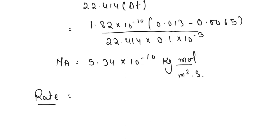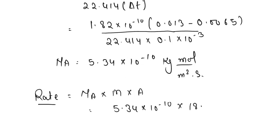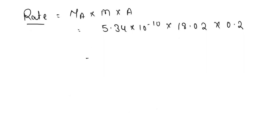The rate is equal to NA multiplied by the molecular weight M multiplied by area. So: NA value 5.34 into 10 to the power minus 10, multiplied by 18.02 (molecular weight of water), multiplied by 0.2 (our area). The rate comes out to be 1.925 into 10 to the power minus 9 kilogram per second.